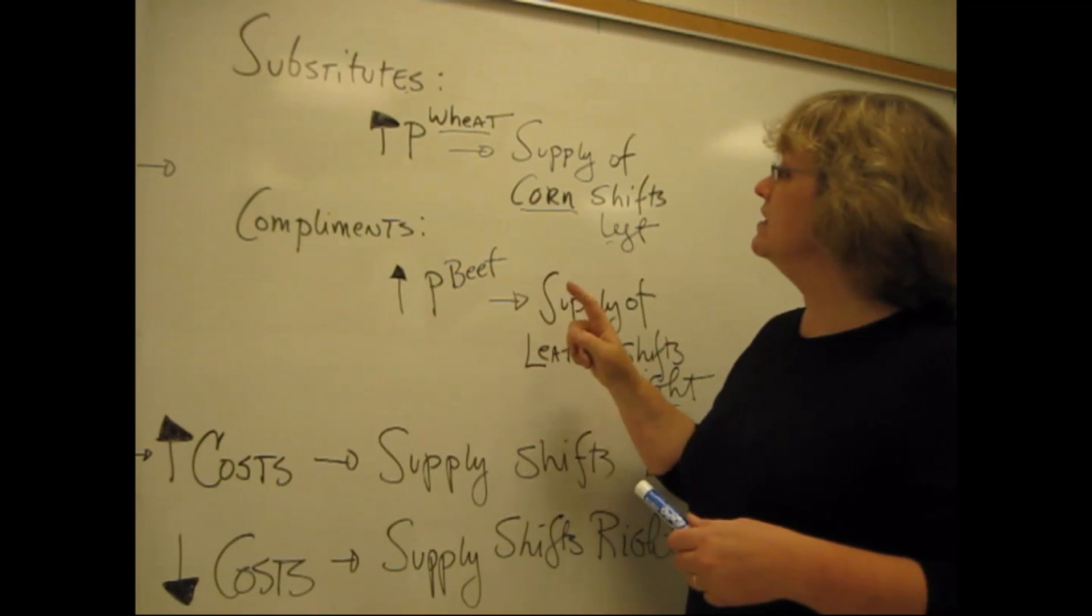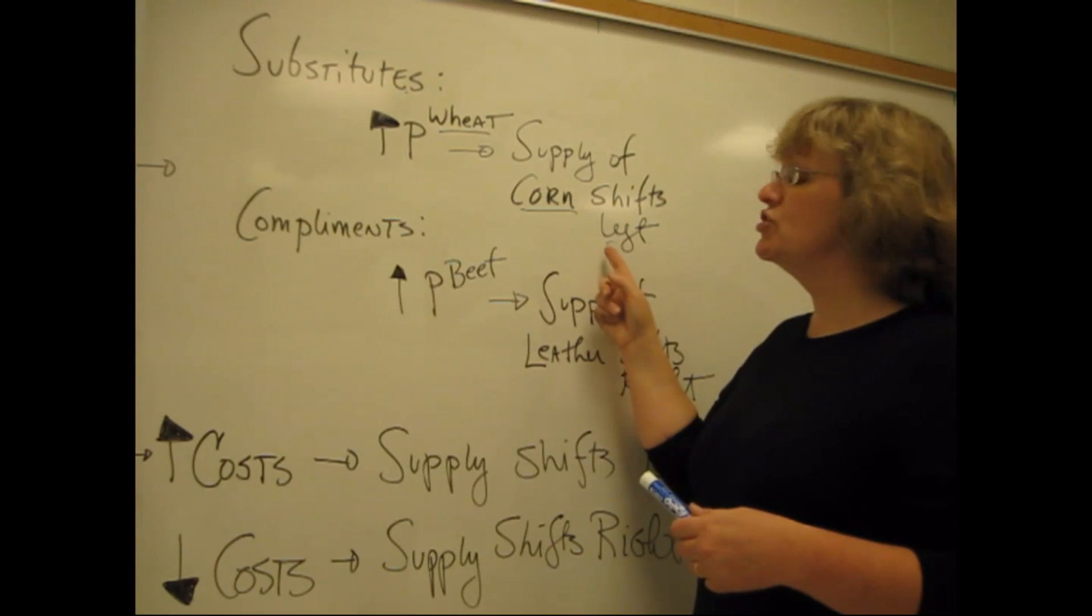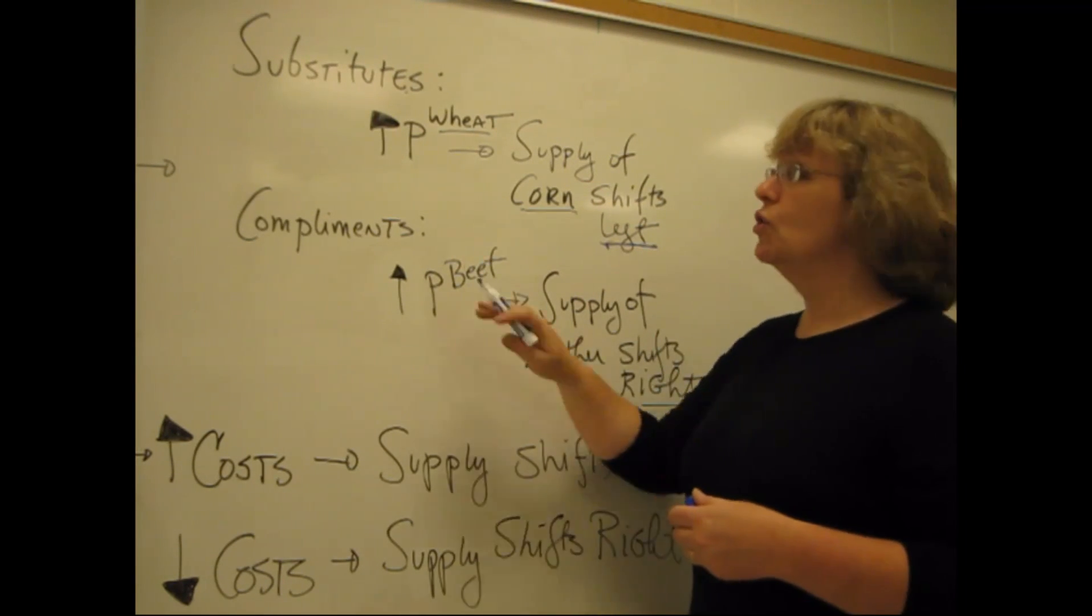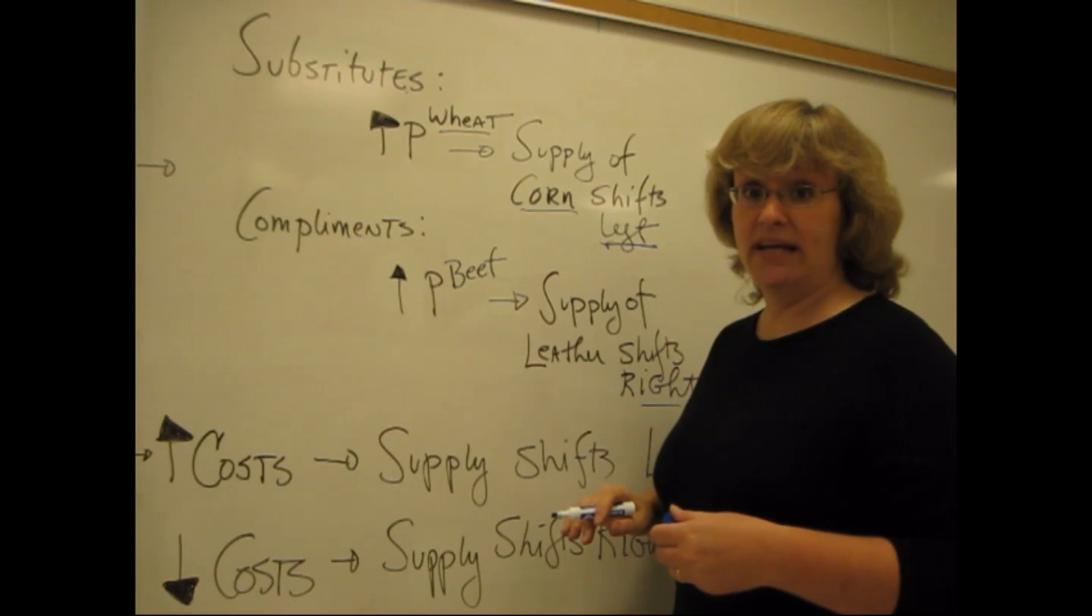So an increase in the price of wheat causes the supply of corn to shift to the left. That leftward shift is a decrease.